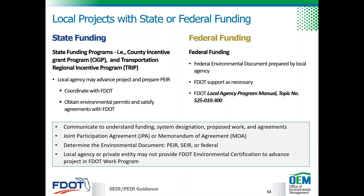A local agency may advance a project through any one of several state funding programs, such as the County Incentive Grant Program and the Transportation Regional Incentive Program. If state funds are being used, the local agency may prepare a PEER to support its acquisition of appropriate environmental permits and to satisfy other agreements with FDOT. The local agency should follow the procedures outlined in Part 1, Chapter 10 of the PD&E manual. There may also be instances when a local agency seeks to advance a project with federal highway funds, in which case a federal NEPA document would generally be prepared.